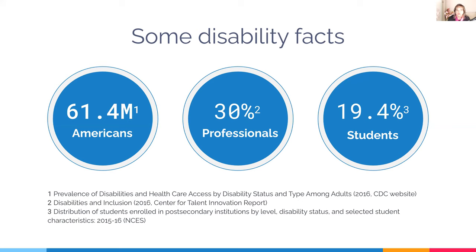According to the National Center for Educational Statistics, about 19.4% of undergraduate students in higher institutions reported having a disability, and about 11.9% of graduate students. These numbers reflect students who self-identified and registered with their local disability office. Anecdotal data from colleagues across several institutions suggests the actual percentage of students with disabilities is between 30% and 35%.